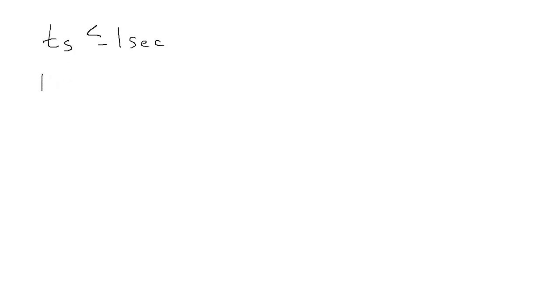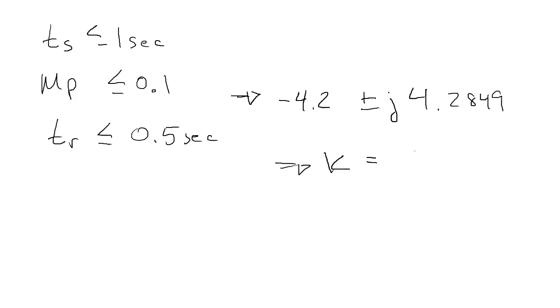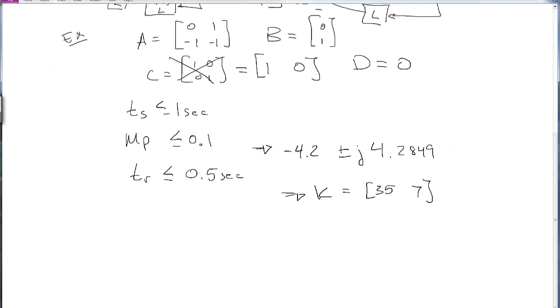We had performance requirements that we needed a settling time less than or equal to 1 second, a max overshoot less than or equal to 0.1, and a rise time less than or equal to 0.5 seconds. And that said that we should have eigenvalues in the locations minus 4.2 plus or minus j times 4.2849. And that gave us a gain K of [35, 7].